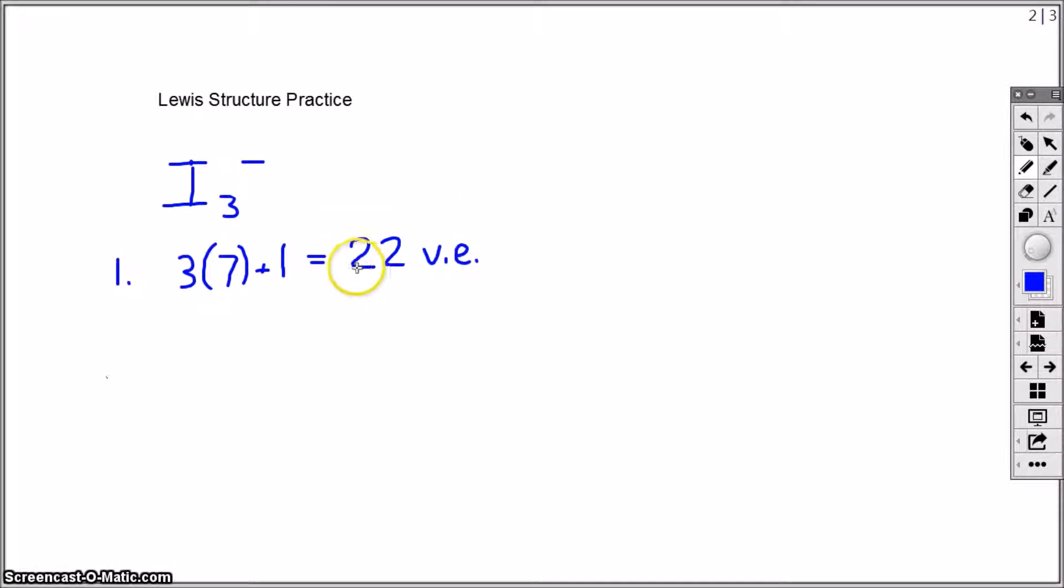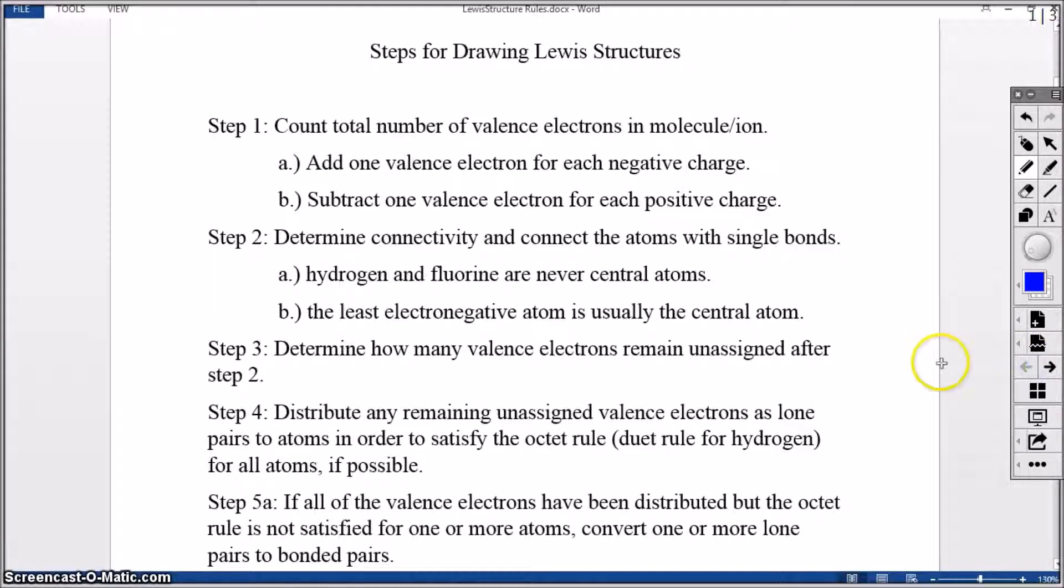I need to distribute them in one way or the other such that the octet rule is satisfied for all the atoms, if at all possible. In the second step, then, I need to start connecting my atoms, determine what's called the connectivity of my atoms by connecting all the atoms with single covalent bonds.